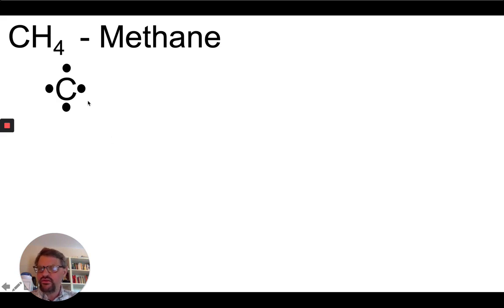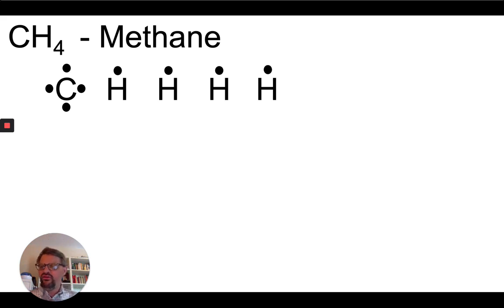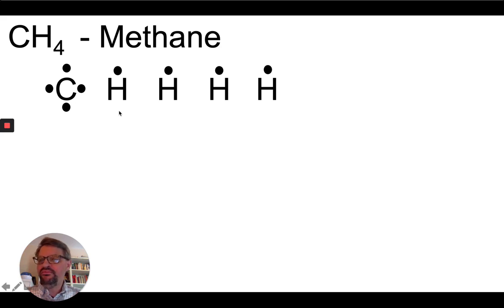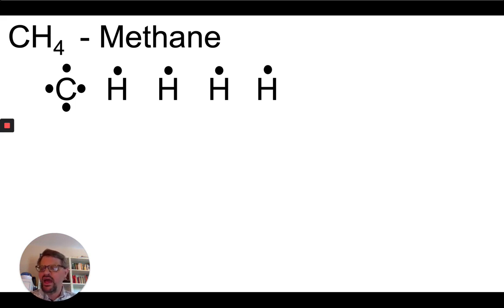Carbon has four valence electrons — if you do the count-over trick with the periodic table, carbon is four places over. We also have four hydrogens in the formula, and each hydrogen has one valence electron. When these atoms bond together, they bond in a way where these valence electrons will hold them together. The rule is that each element needs to have an octet of electrons, whether shared or held only by that atom. Shared electrons count toward the eight. Hydrogen only needs two electrons.